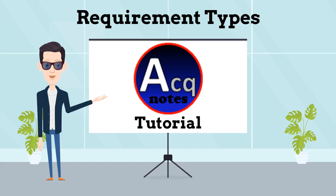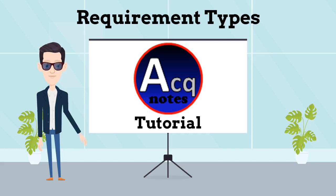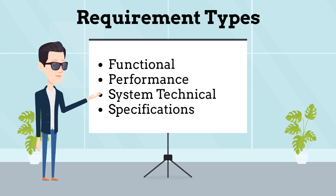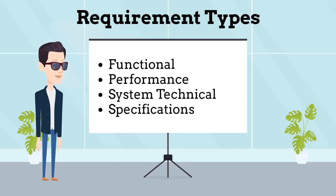Welcome to ActNotes Tutorials. My name is Dan the Professor, and I am going to give you a quick tutorial on requirement types. There are four main requirement types that engineers, program managers and stakeholders will have to develop on and program throughout a system's life cycle. These requirements range from very high-level concept-focused, to very specific for a part.